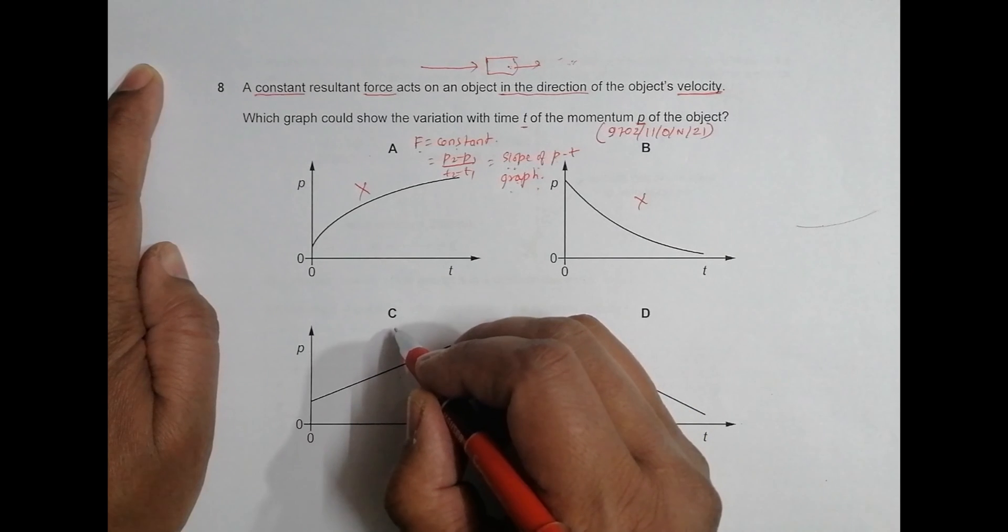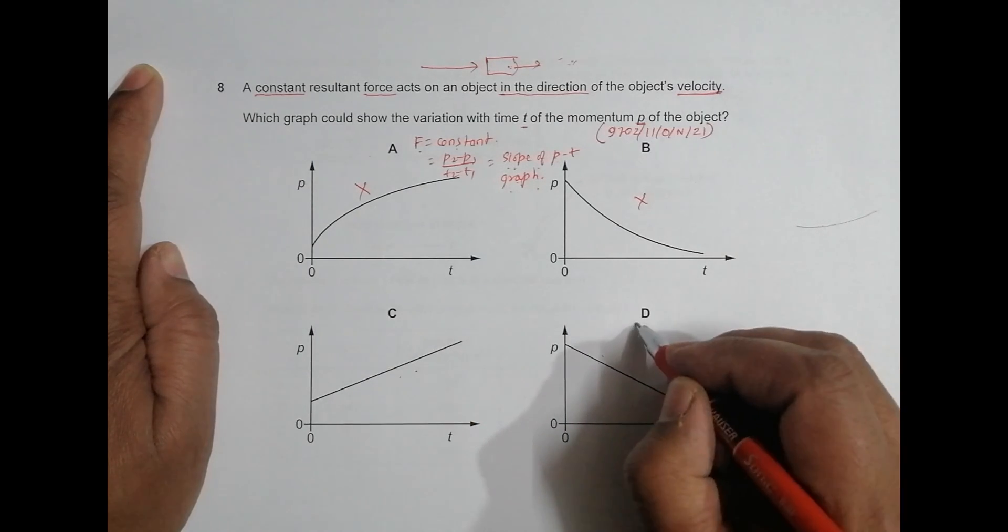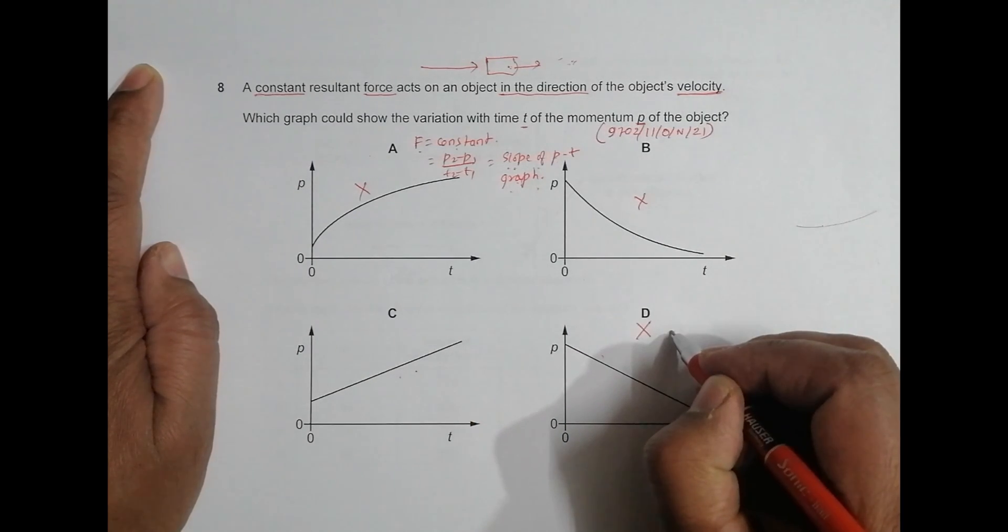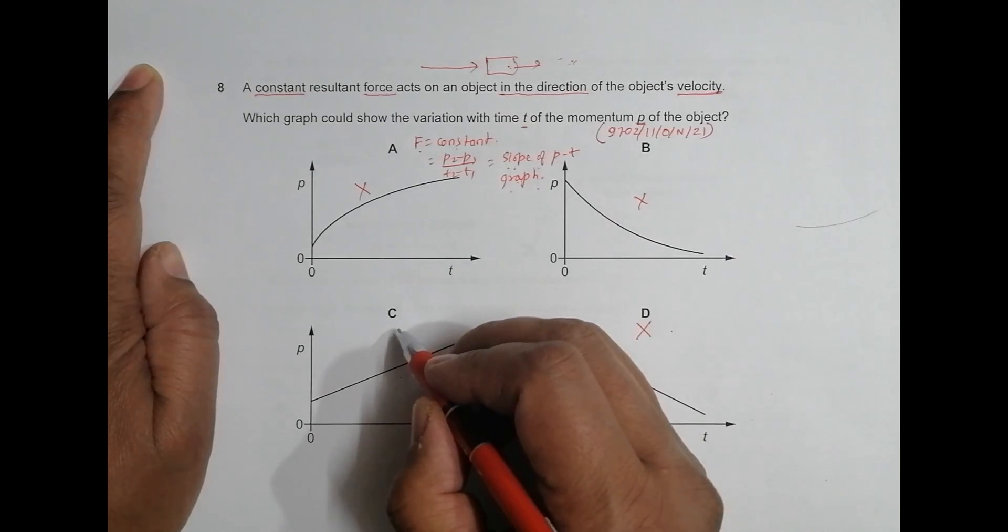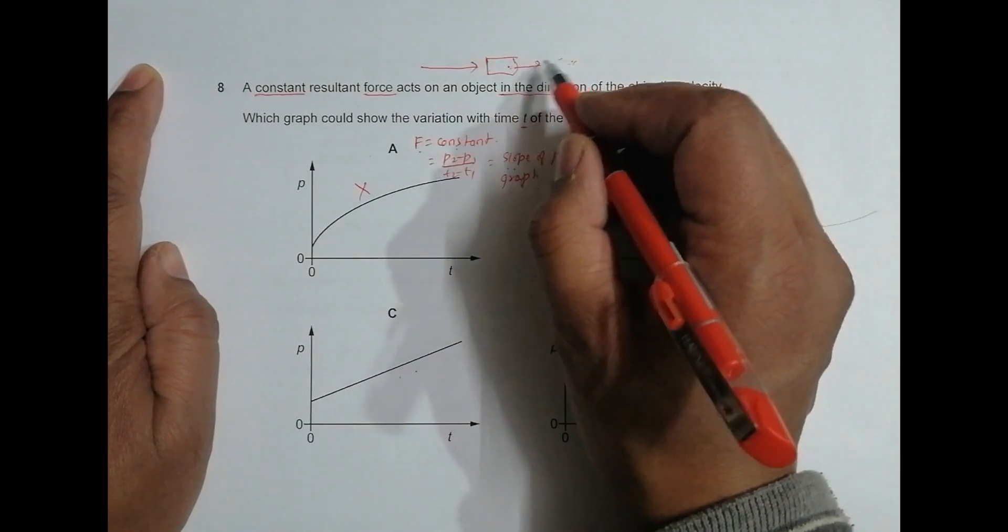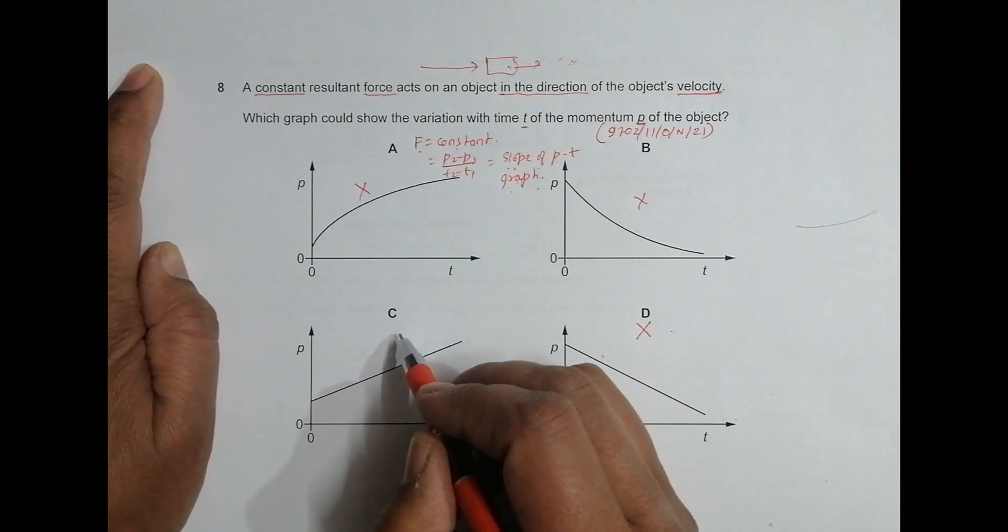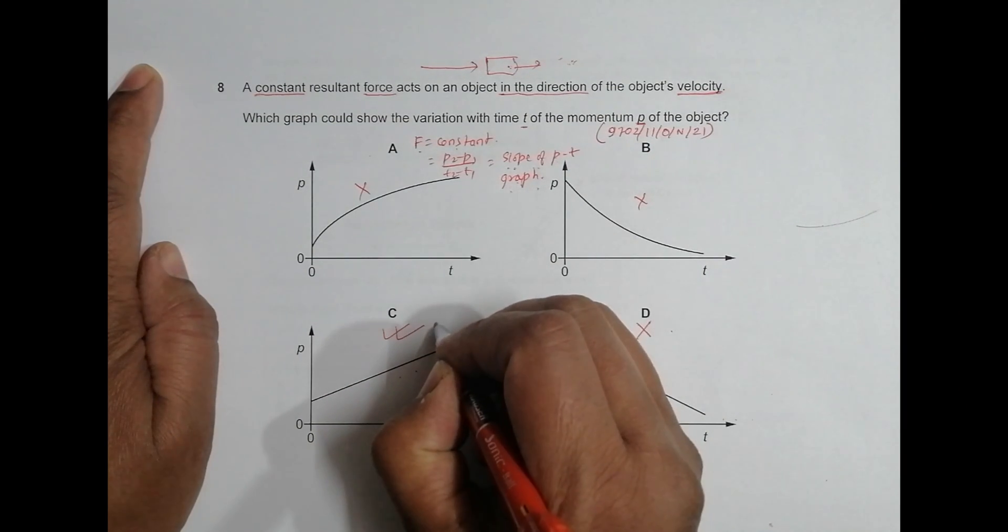Choice number C but not in D. So D also disqualifies. Going through all these, it's only the C which qualifies because V increases, which increases the value of momentum. So C should be the correct choice here.